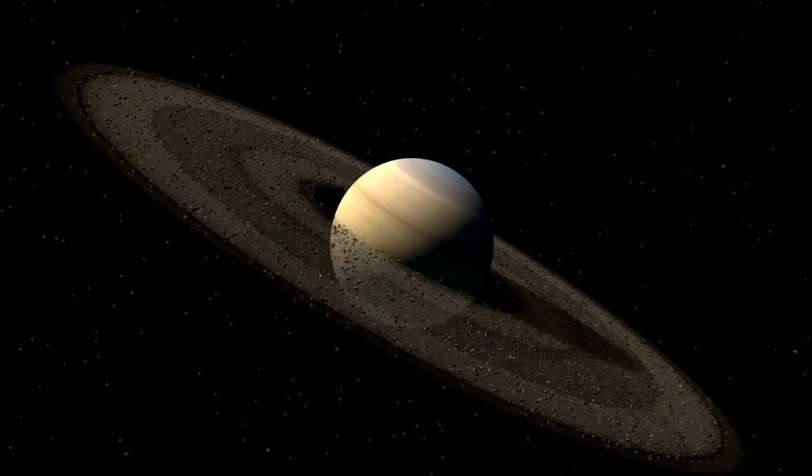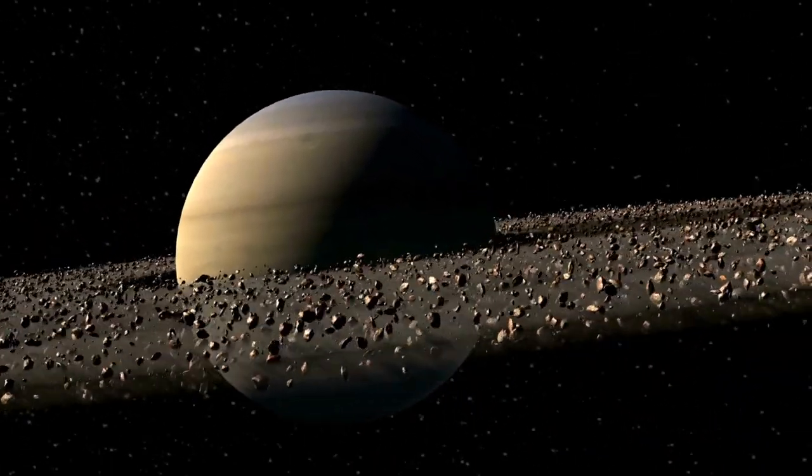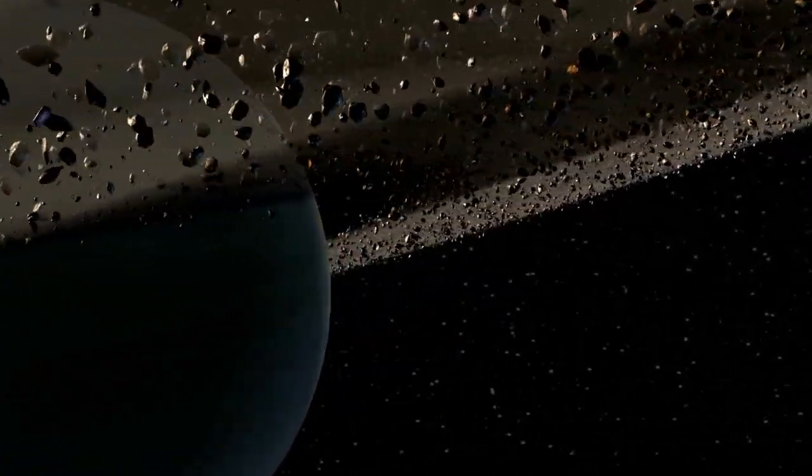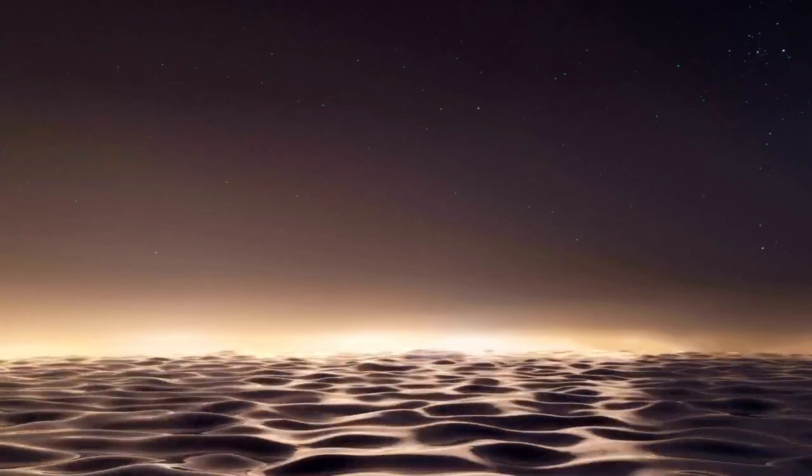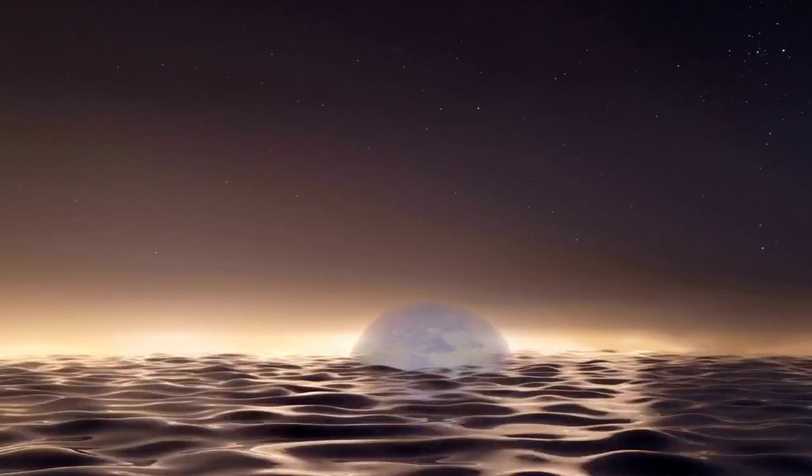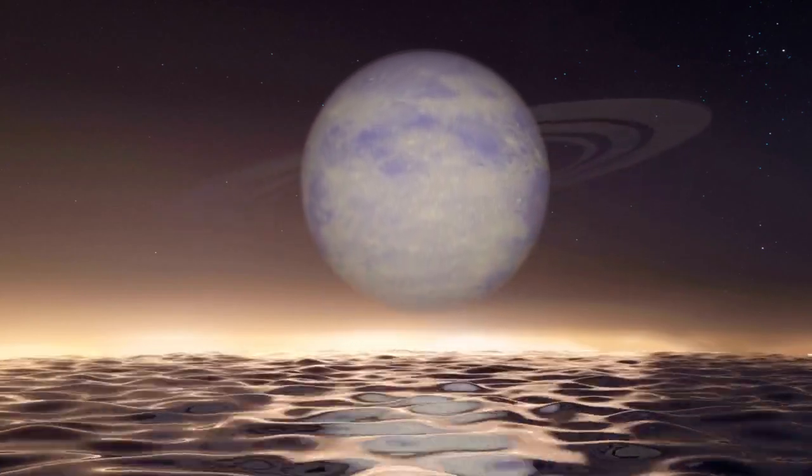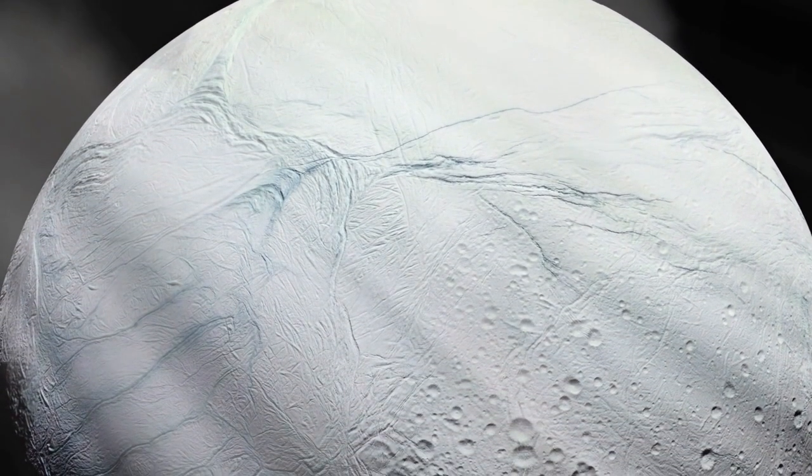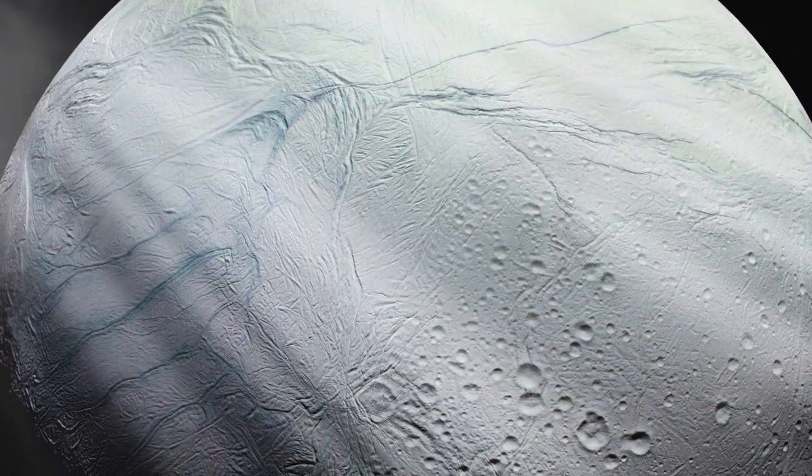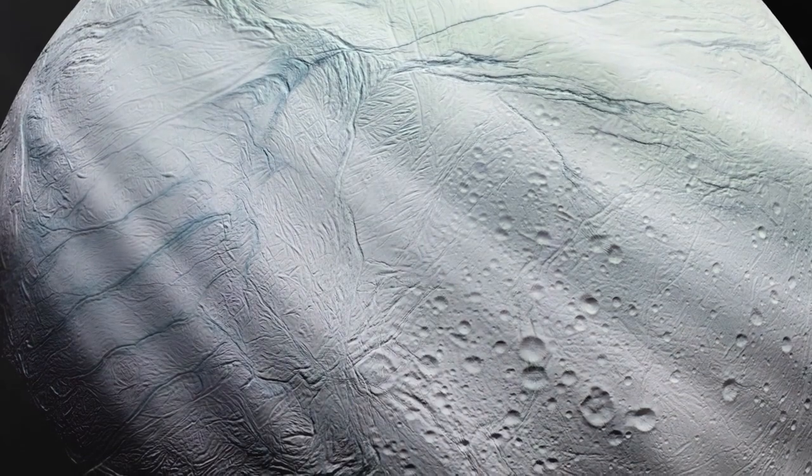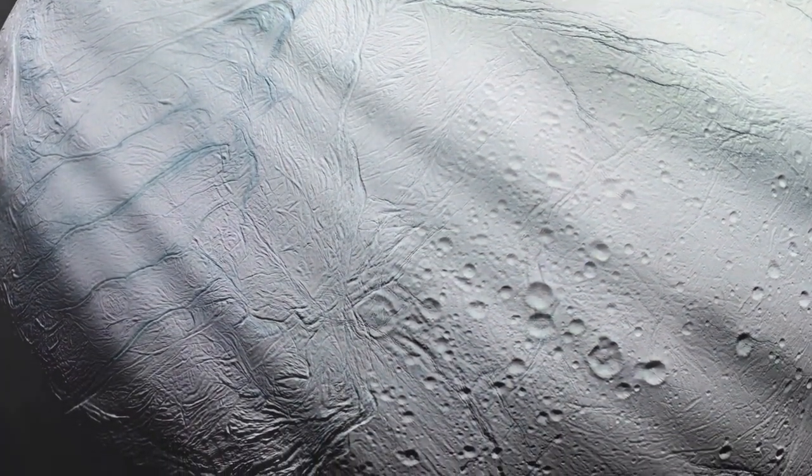Saturn's rings are made up of countless individual pieces of ice and dust, ranging in size from tiny particles to chunks several meters across. Titan, one of Saturn's moons, has lakes and seas made up of liquid methane and ethane, rather than water. Saturn's moon Enceladus has geysers that spew water and other material into space, leading scientists to believe that it may have a subsurface ocean that could support life.